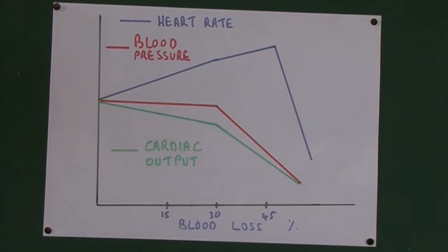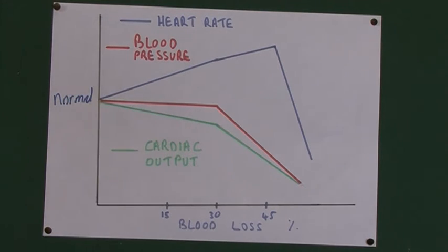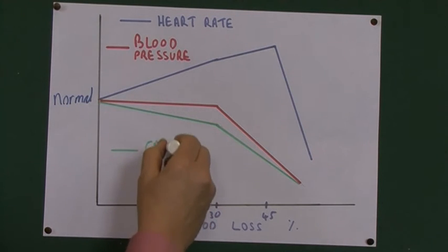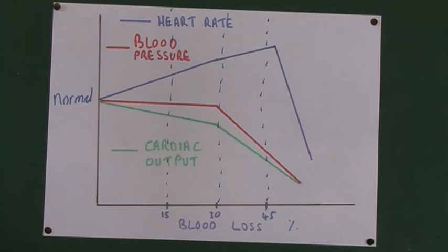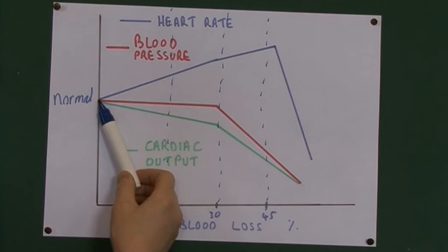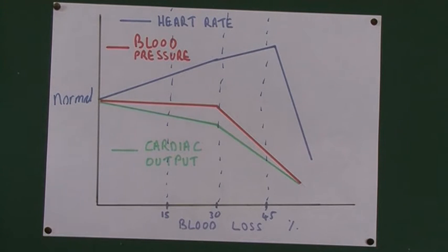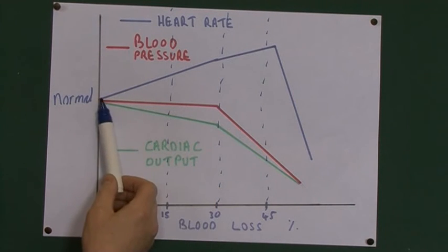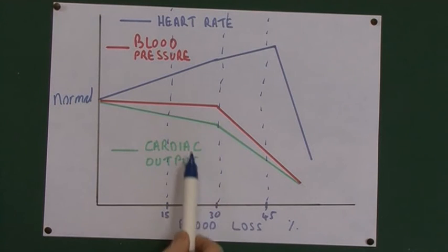This graphic explains the child's response. Starting from normal, as the child bleeds — at 15% blood loss, 30%, and 45% — we notice the heart rate increases fairly steadily: the tachycardic response. The blood pressure, shown by the red line, goes down very little and is basically maintained at normal levels until really significant amounts of blood — like 30% of blood volume — have been lost.